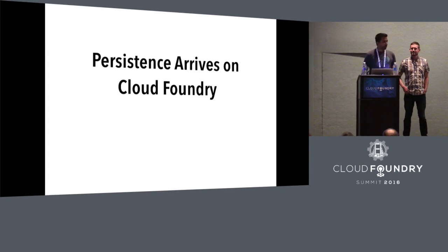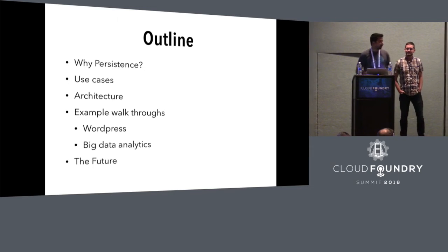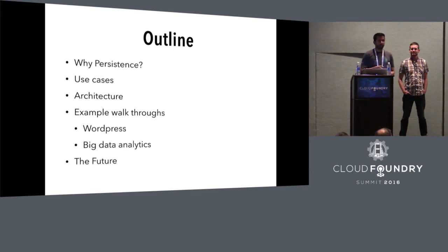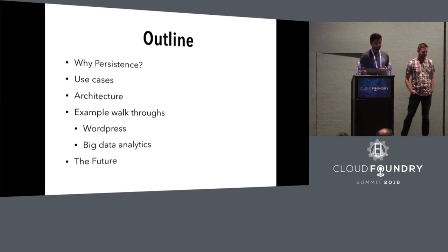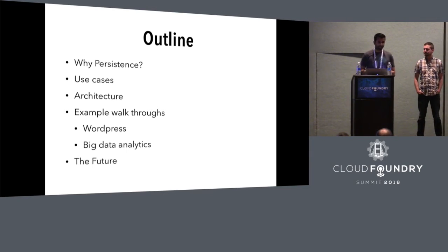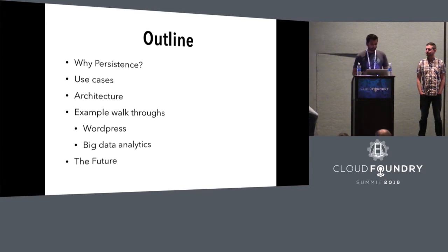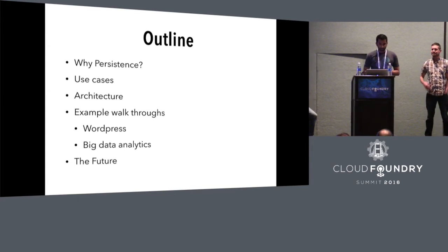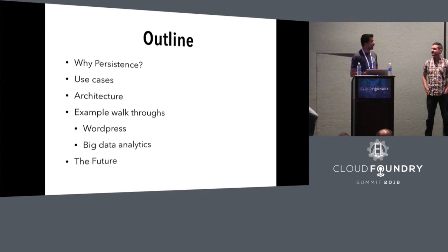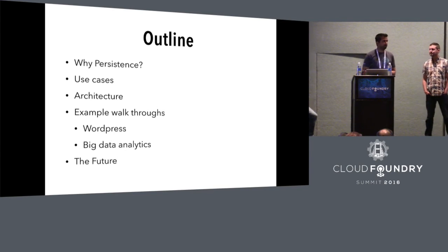Good morning, everybody. A quick outline for today's talk. First, we'll talk about why we need persistence for CF applications — by this I mean native persistence. We'll back it up with a few use cases from multiple customer scenarios and application use cases. We'll follow it up with the architecture we came up with, then go through walkthroughs for WordPress and one sample big data analytics application, and follow it up with futures and commits.